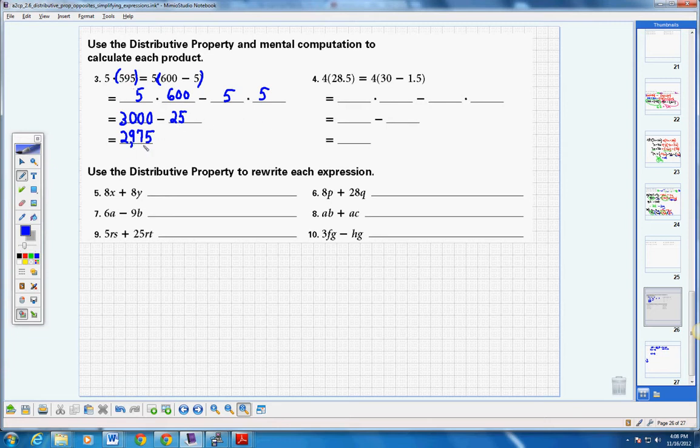Another way to do some decimal values: 4 times 28.5. It's the same as 4 times 30 subtract 4 multiplied by 1.5.